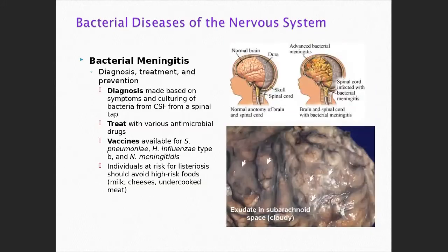Meningitis is really the inflammation of the meninges — the area in the back of the head, but it can go upward. We think of this whole area as the triangle of concern, because anything that infects these parts of the body — the back of the throat, the sinuses, the eyes, the meninges — can move upward and inward into the brain.